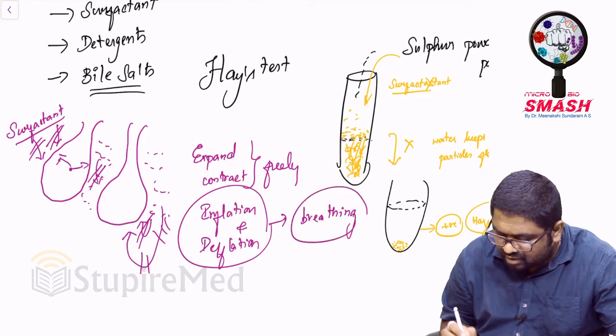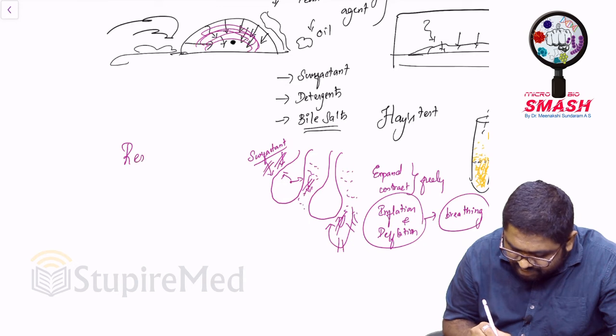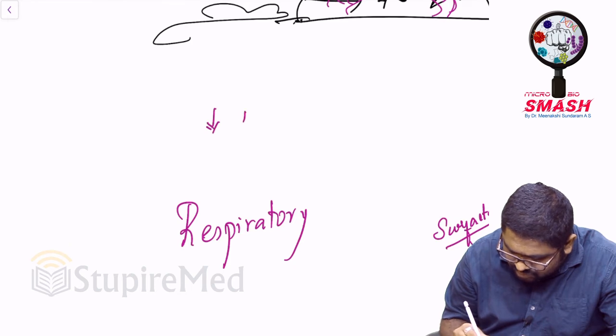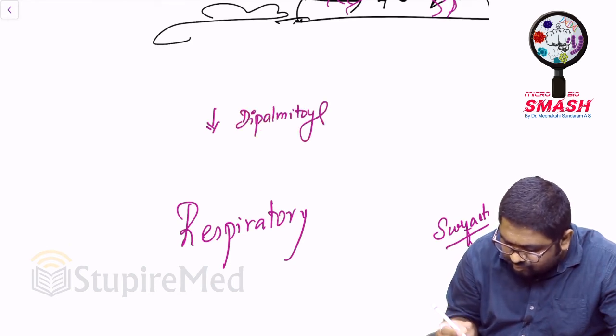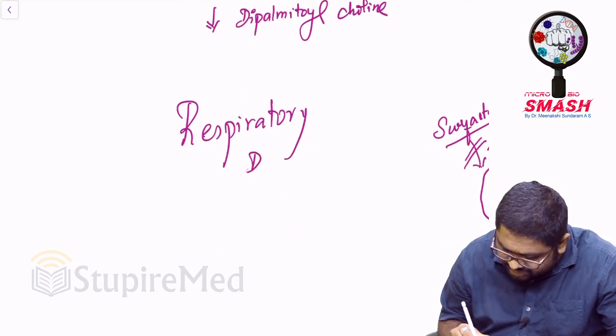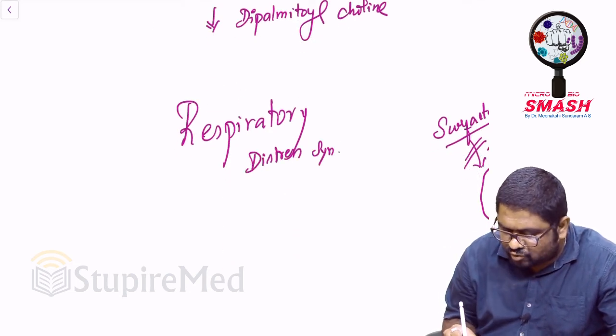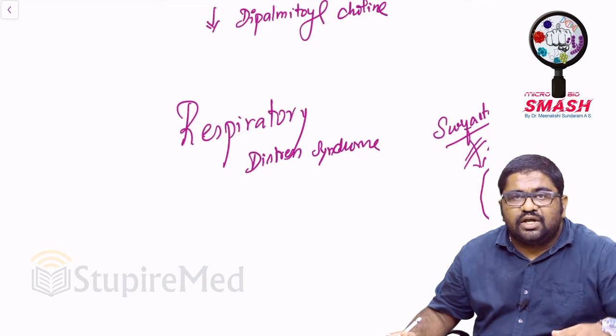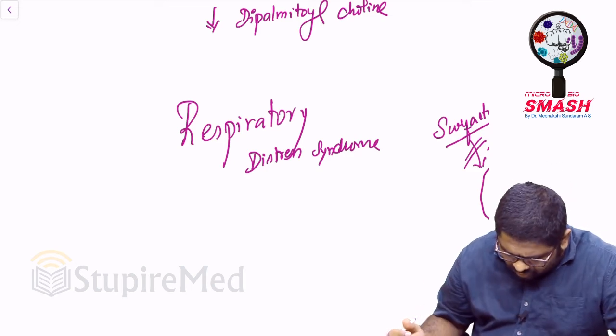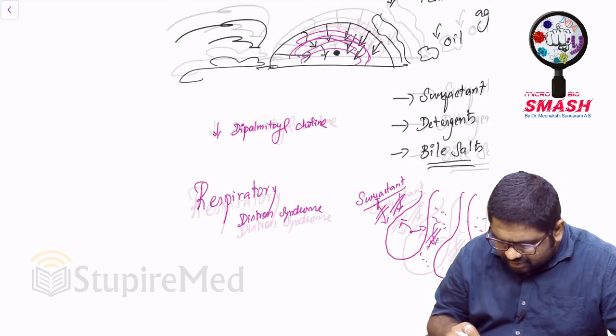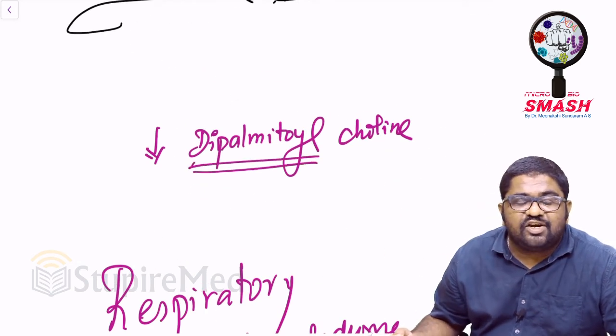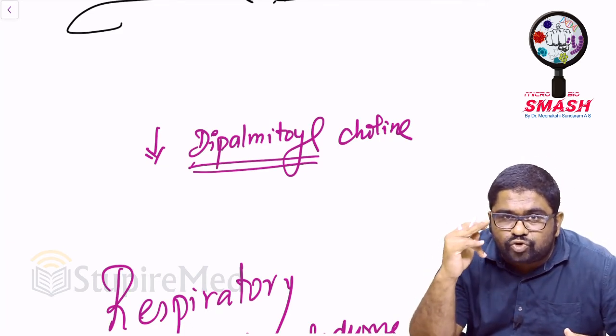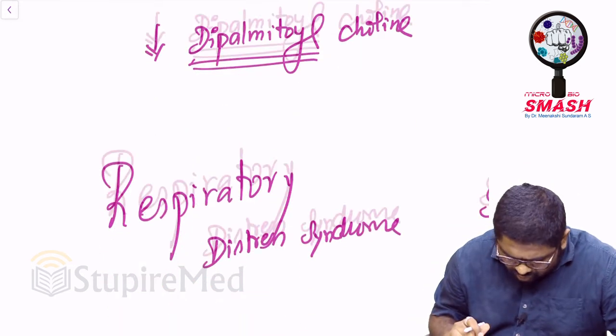Now what happens if this particular surfactant is reduced? This will cause respiratory distress syndrome. Decreased dipalmitoyl choline will cause respiratory distress syndrome. It will feel as if a huge amount of water has been settled inside your body even though you don't have much water. You'll feel like somebody sitting on your chest. You'll find difficulty in breathing. So all these are things that I want you to remember when it comes to dipalmitoyl choline. What is the meaning of dipalmitoyl choline? In the glycerol moiety, when I said fatty acids are being bound, if those two fatty acids are palmitic acid, you call them as dipalmitoyl choline.